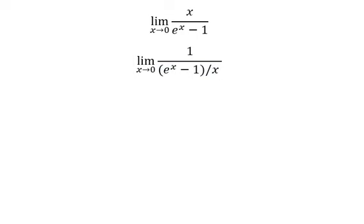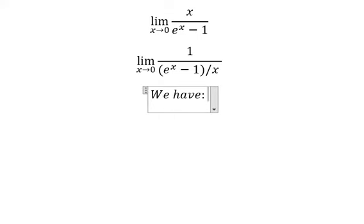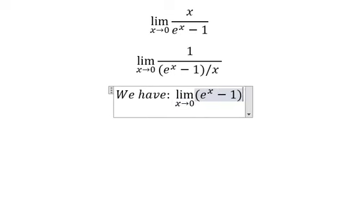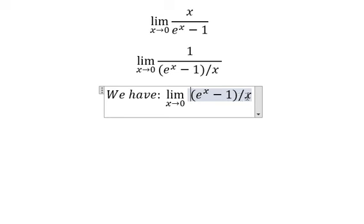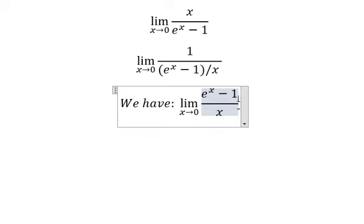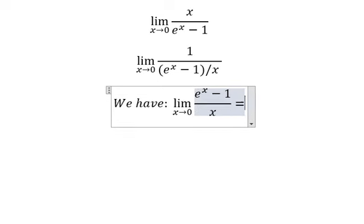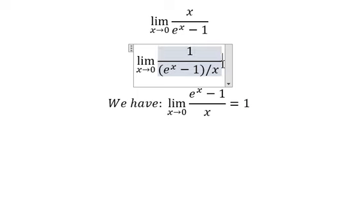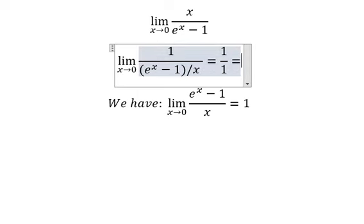Next we have the formula: e to the power of s minus one, over s. And this one equals to number one, so that means we have one over one, and equals to number one.